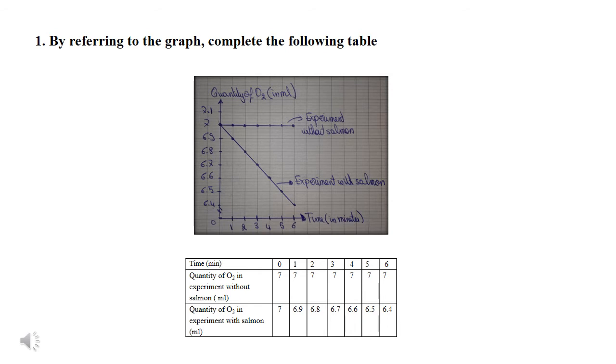So, we write these in the table: zero, one, two, three, four, five, six. And now we pick out the quantity of oxygen in the experiment without salmon at each time interval. For example, at time zero, see the graph. The quantity of oxygen in the experiment without salmon is seven, write seven. At time one, it remains the same, so write seven. At time two through six, it remains seven.